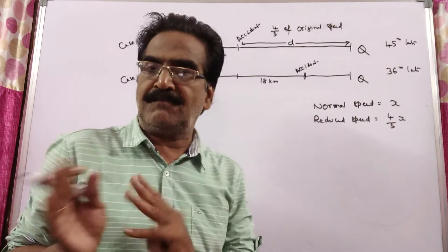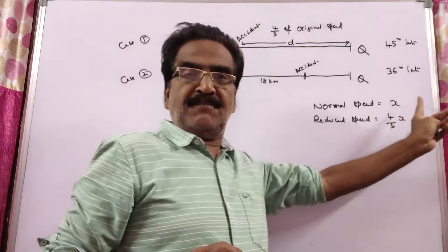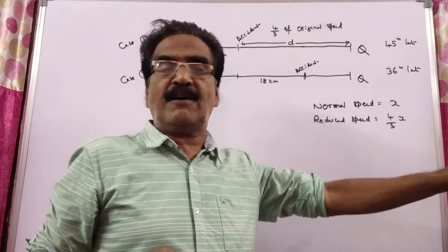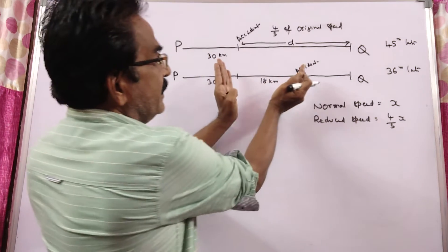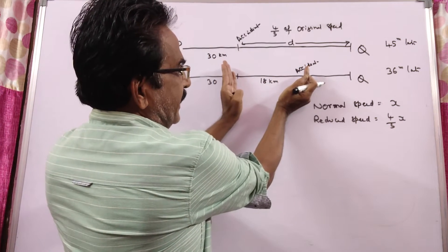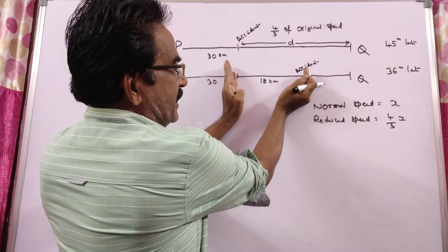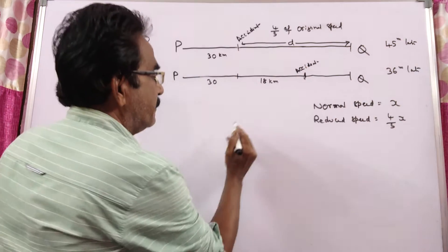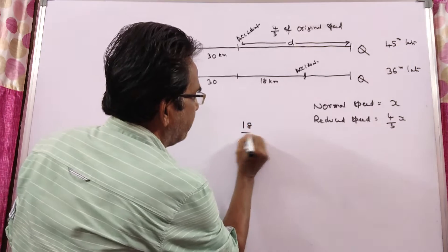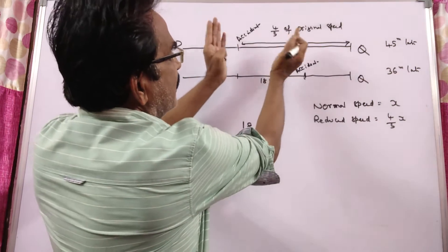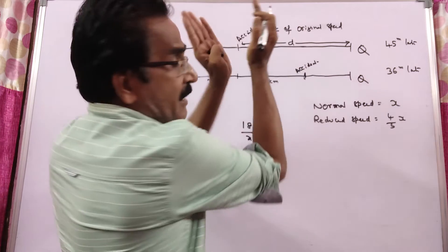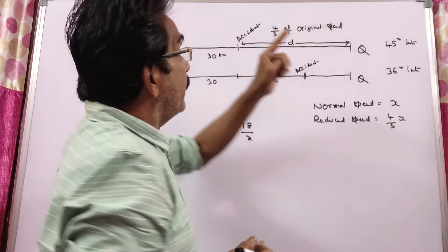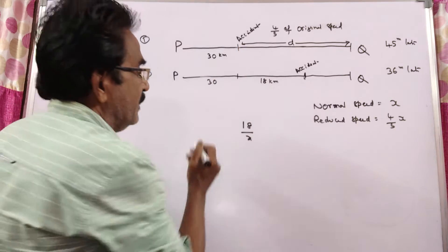Friends, first let us find the speed of the train. Say normal speed of the train is x, and reduced speed is 4/5 of x. In the second case, this 18 kilometers is travelled with normal speed, whereas in the first case, this 18 kilometers is travelled with reduced speed because the accident occurred there.